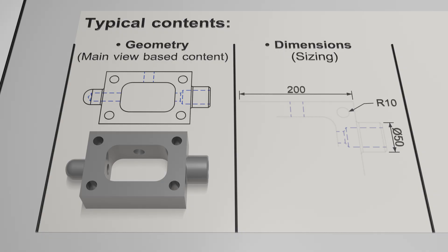Dimensions are more than likely the next thing you will notice when glancing around an engineering drawing. There should be sizes for all of the necessary elements of the subject in question to allow recreation or production. These sizes should also follow rules and should appear notably similar in format.